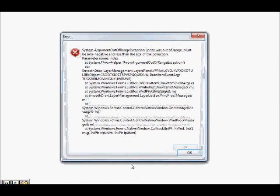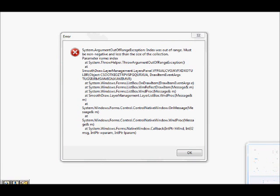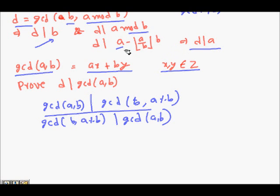Now we prove the other direction. Let D be the GCD of B and A modulo B. So D divides B and D divides A modulo B. Since A modulo B equals A minus floor(A/B) times B, and D divides B and divides A modulo B, D must also divide A.